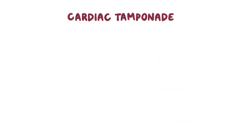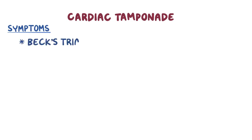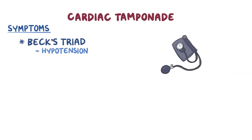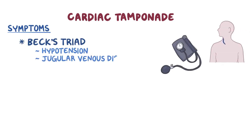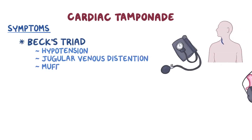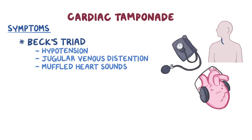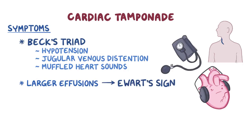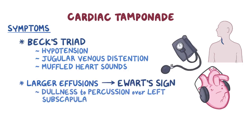Cardiac tamponade is life-threatening and causes Beck's triad, which is hypotension due to the impaired cardiac output, jugular venous distension due to blood backing up, and muffled heart sounds on auscultation because of the extra fluid between the heart and the stethoscope. In fact, larger effusions can cause Ewart's sign, which is dullness to percussion over the last subscapular area due to compression of the left lung base.